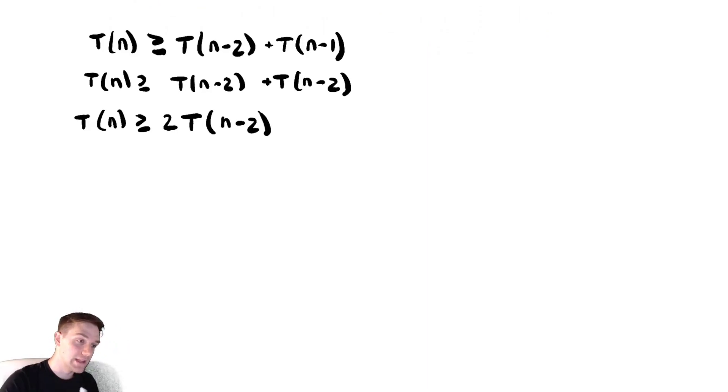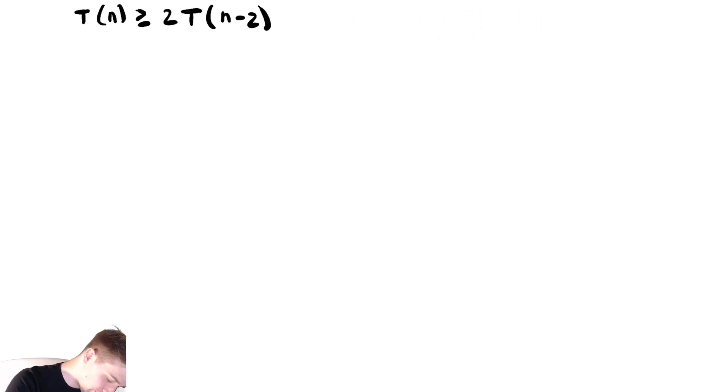Now let us do some substitutions. t of n is greater than or equal to two times substitute in n minus two and we get two t of n minus four.